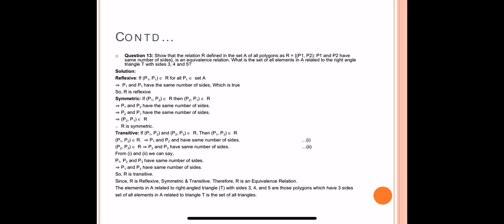For reflexive: if (P1, P1) belongs to R for all P1 belonging to set A, this implies P1 and P1 have the same number of sides, which is trivially true. So R is reflexive.